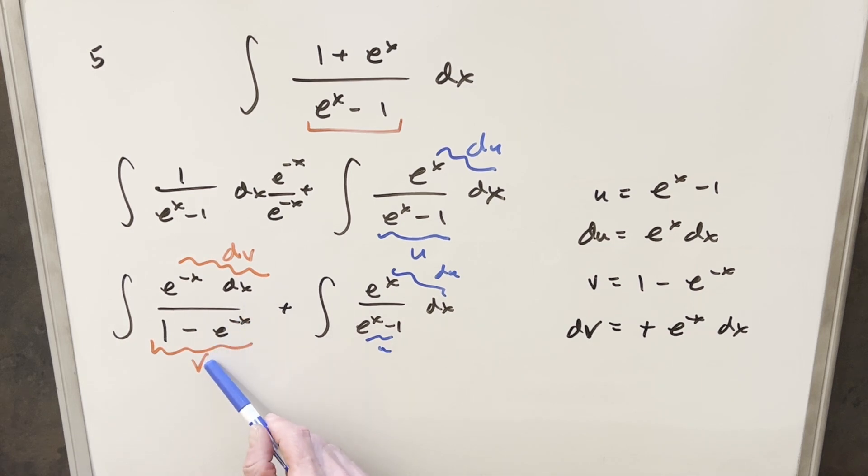So what we have is the integral of dv over v and the integral of du over u. So we really have the same integral with different substitutions. So let's just do these together.